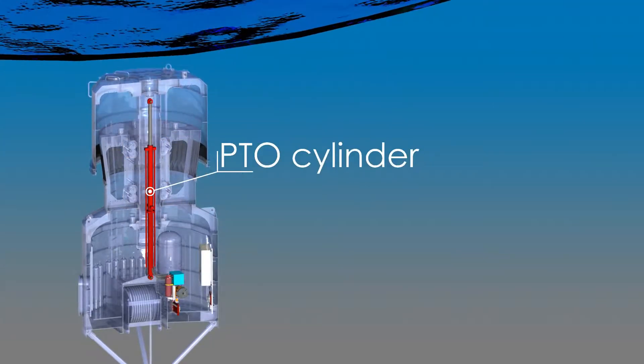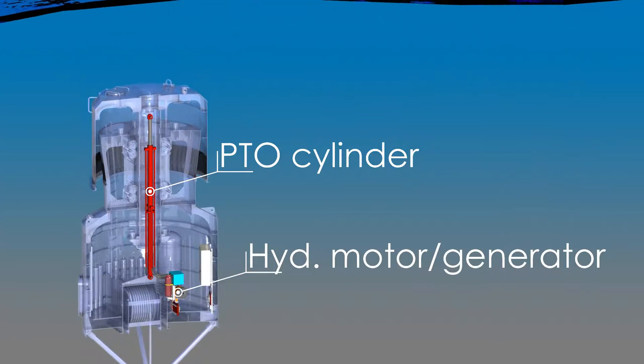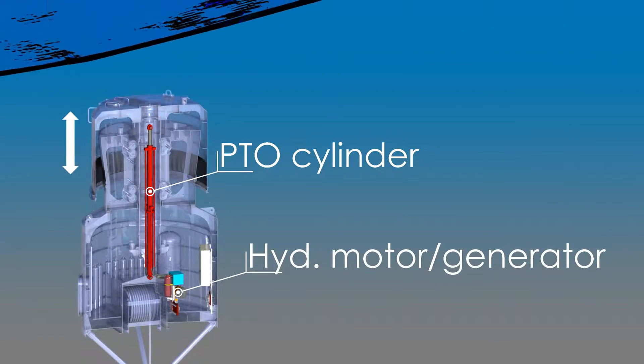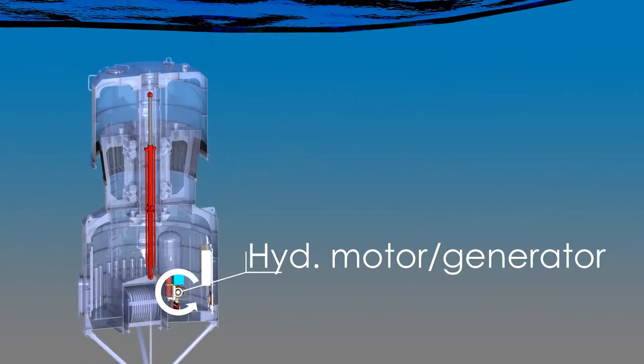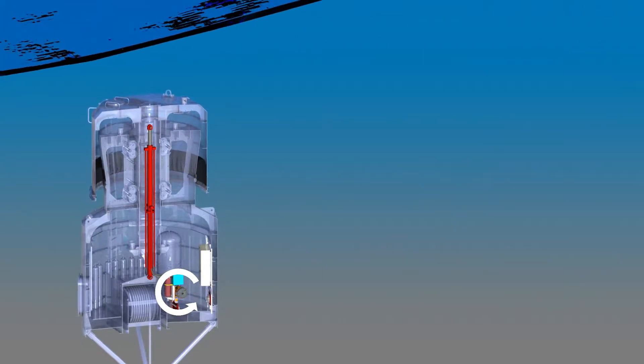A hydraulic cylinder coupled to a hydraulic motor converts this reciprocating linear motion to rotary motion, which is then converted to electrical energy using a conventional generator.